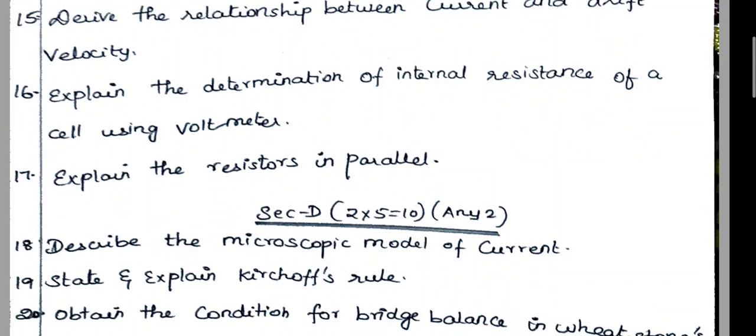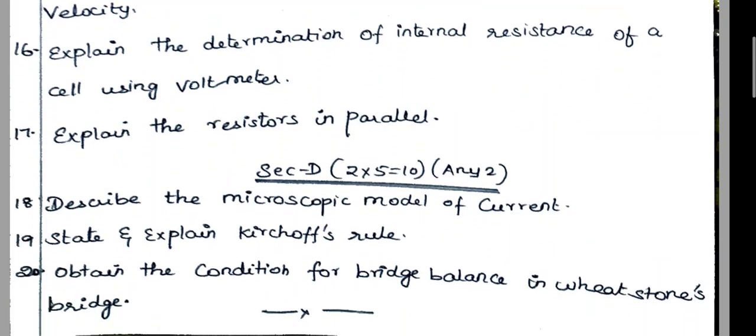Next, Section D — two to five marks, 1 to 3 lab. Eighteen question — describe the microscopic model of current. Nineteen question — state and explain Kirchhoff's rule. Twenty question — obtain the conditions for bridge balance in Wheatstone bridge.